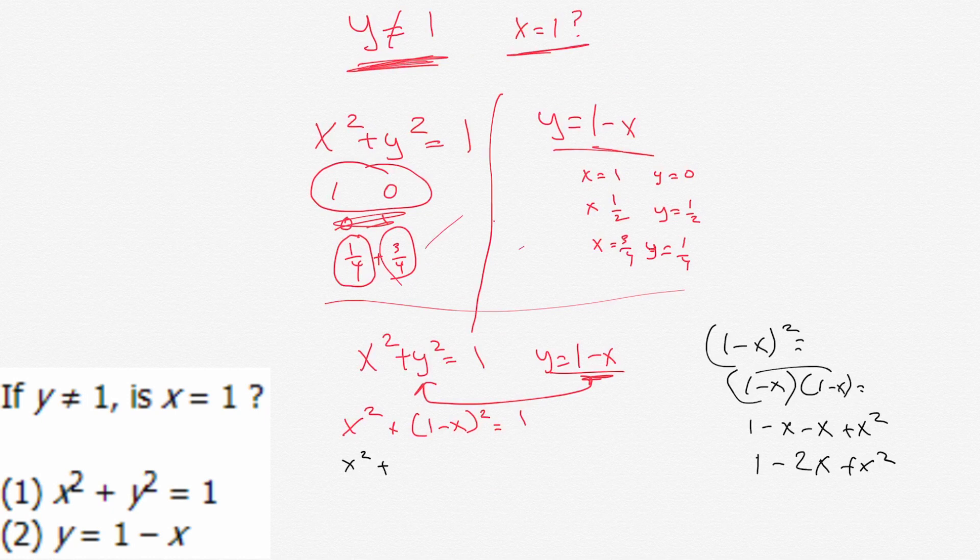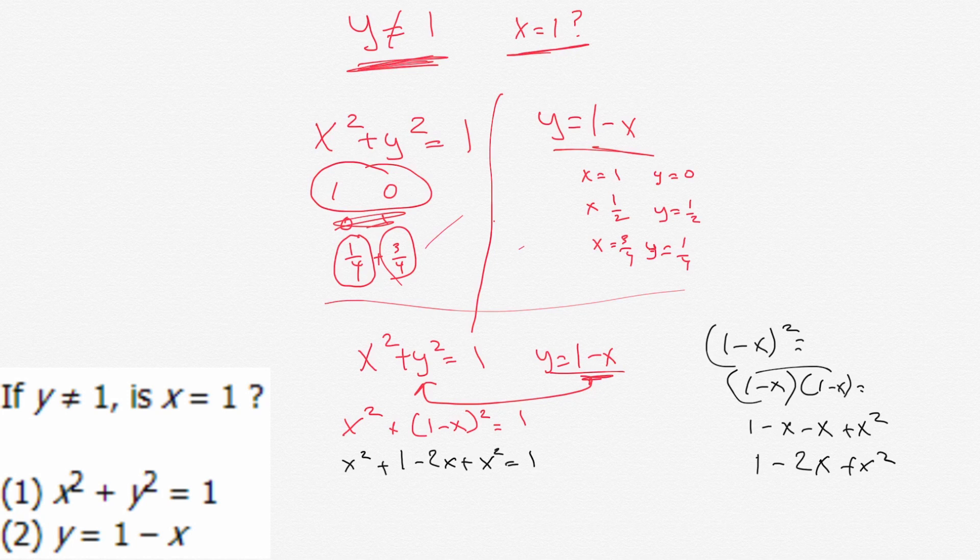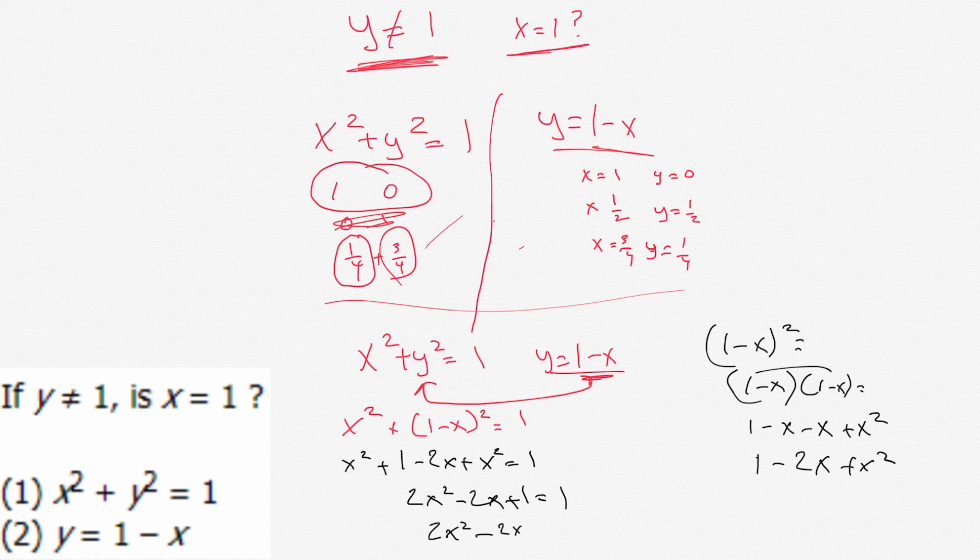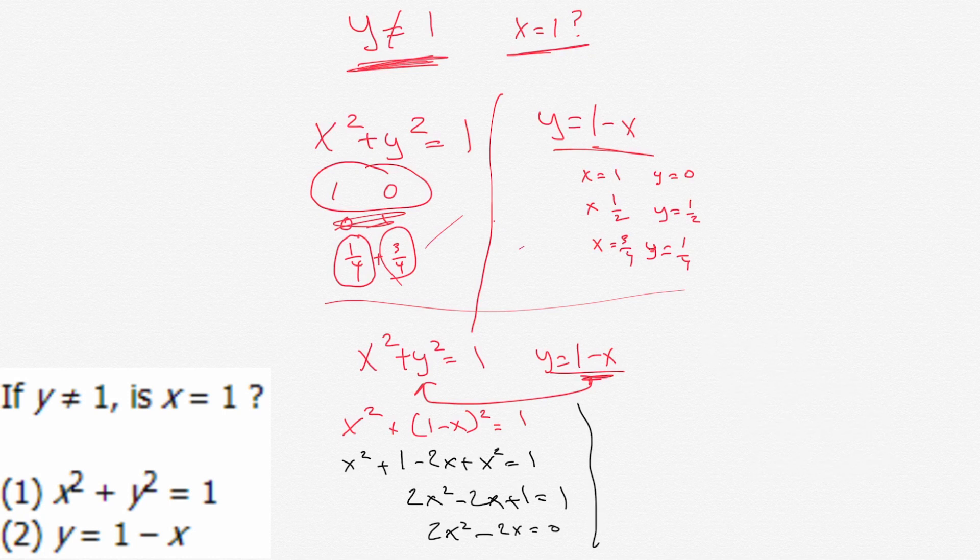So we come back over here, we get x squared plus one minus two x plus x squared equals one, and we do a little math, we get two x squared minus two x equals one, correct? And then at that point, the ones cancel out, so you get two x squared minus two x equals zero.